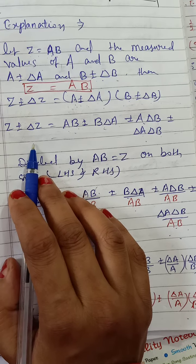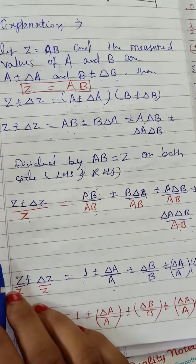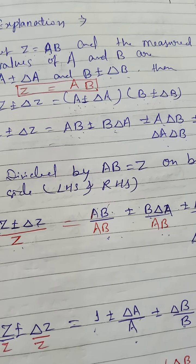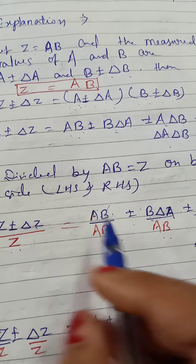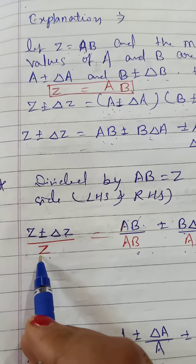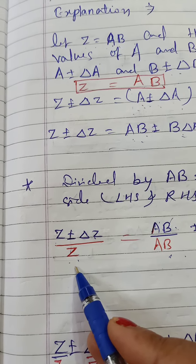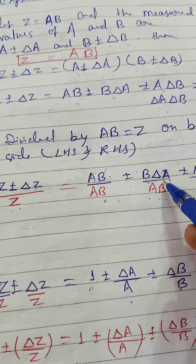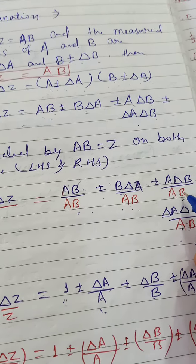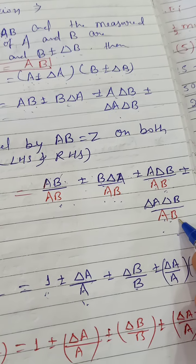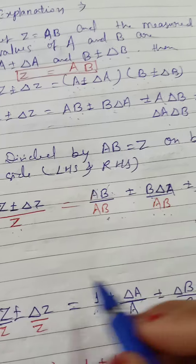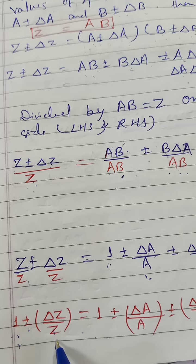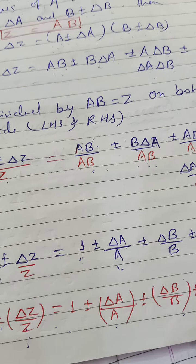Dividing both sides by a·b on LHS and RHS, we get: a·b upon a·b, plus minus delta-a upon a·b, plus minus delta-b upon a·b, plus minus delta-a·delta-b upon a·b. So b cancels with b, giving delta-a upon a; and we get delta-b upon b; and delta-a upon a times delta-b upon b. And z upon z equals 1, leaving delta-z upon z on the left side.